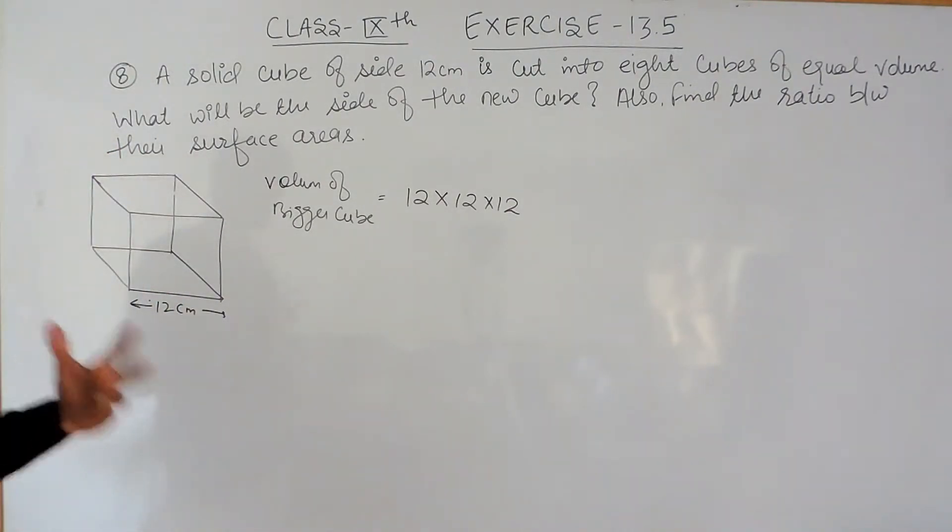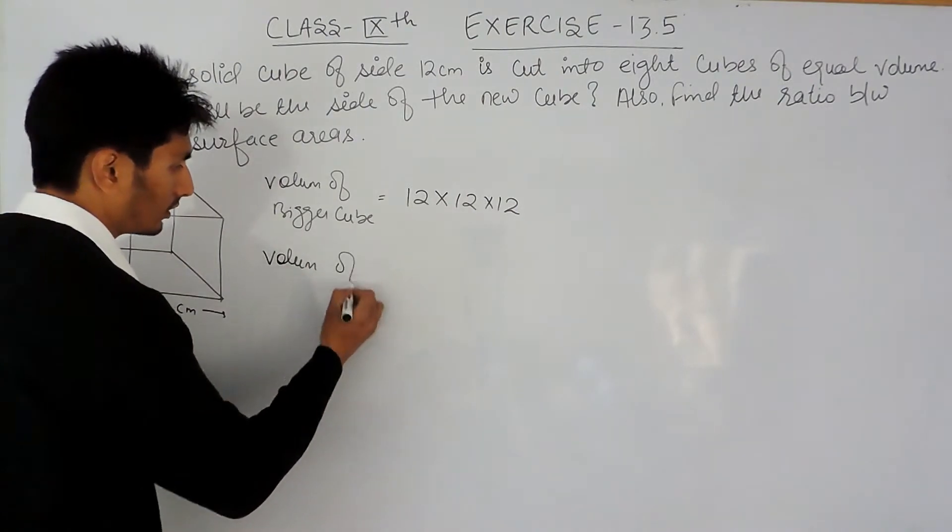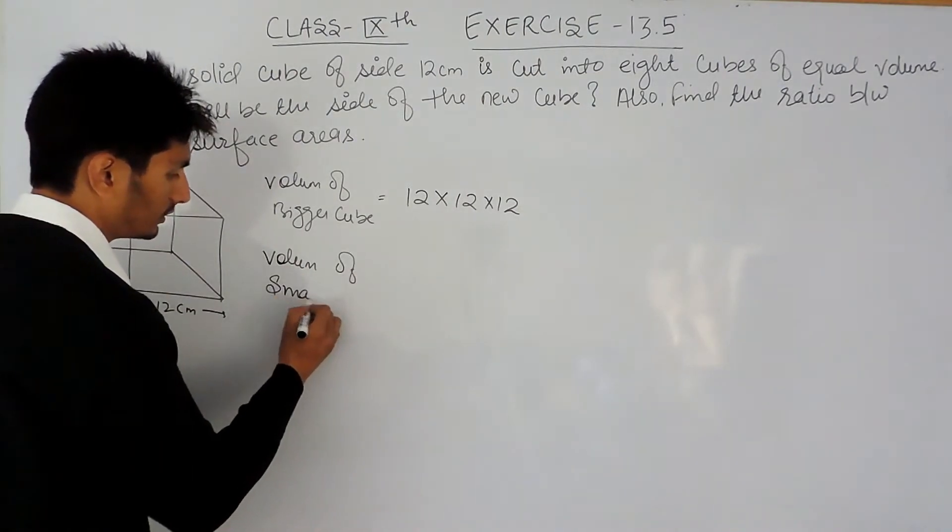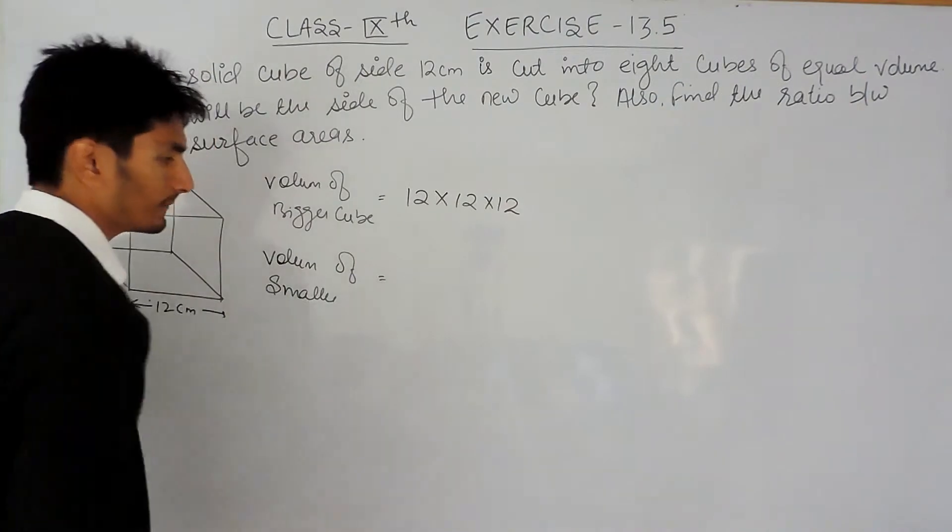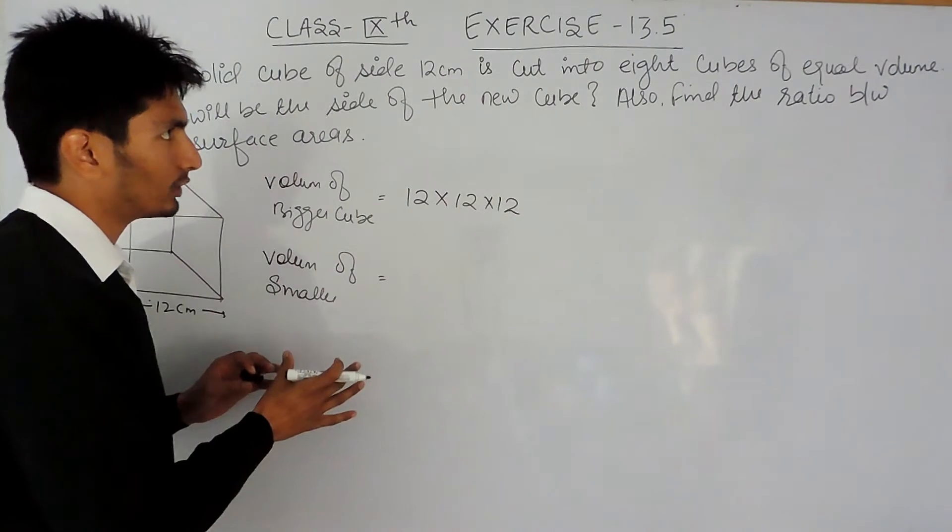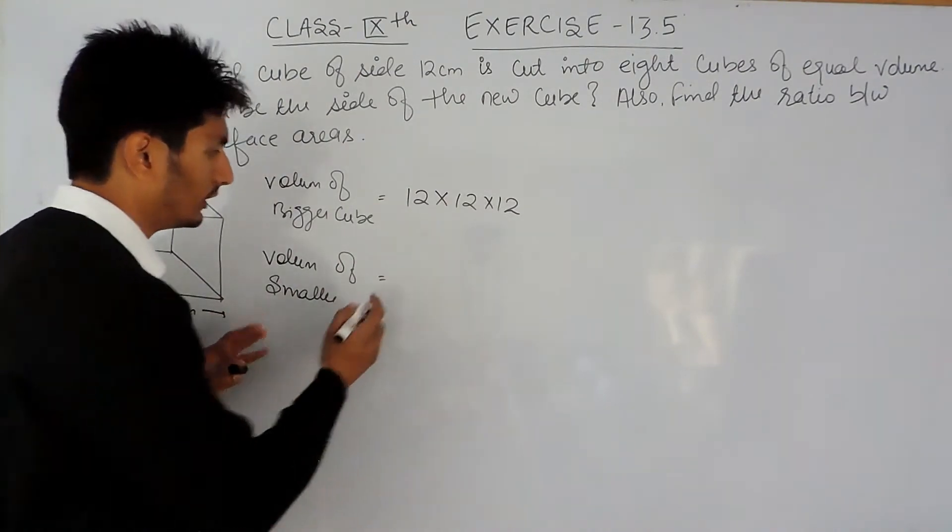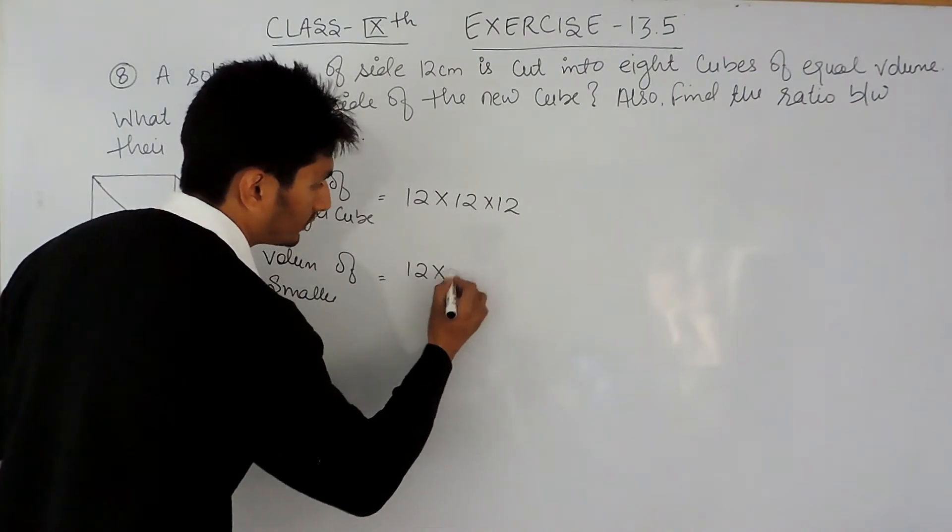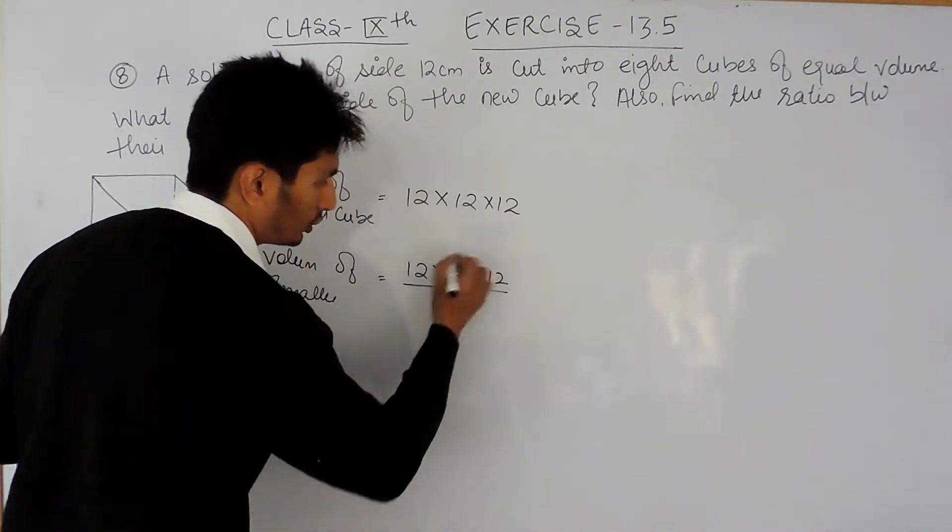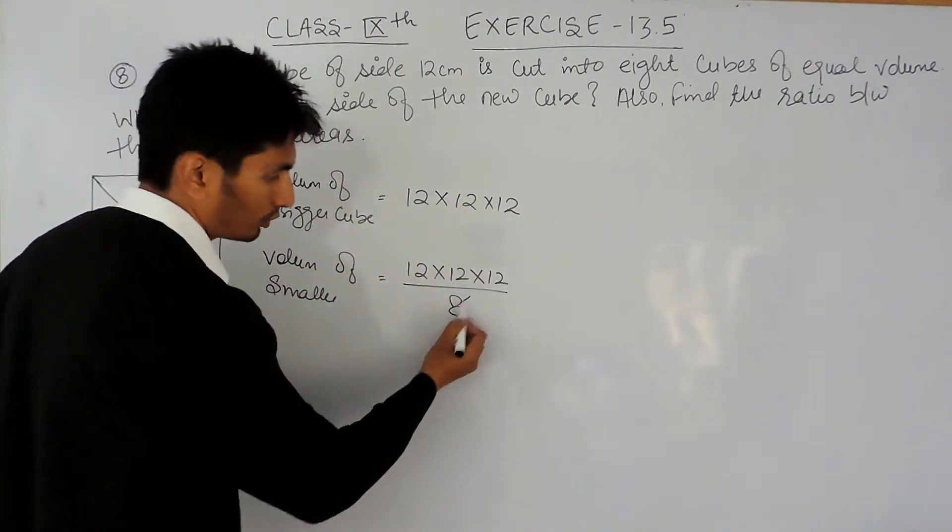Now, this bigger cube has been cut into 8 equal parts which are equal in volume. So obviously, if I have to find the volume of the smaller cube, and because this cube has been cut into 8 pieces and all 8 pieces are equal in volume, so the volume of the new cube will be volume of this cube divided by 8.